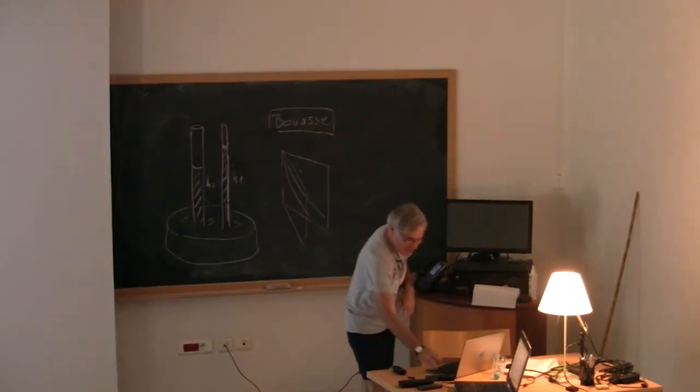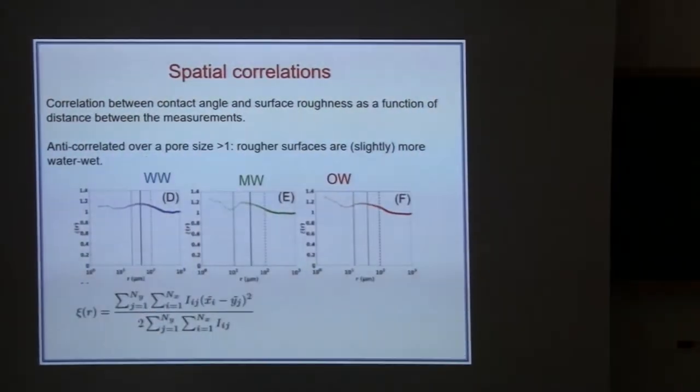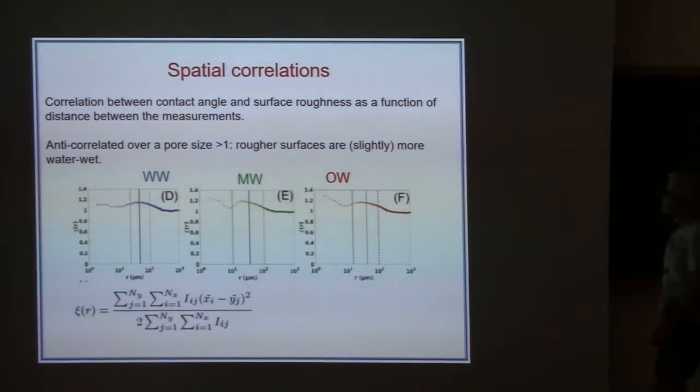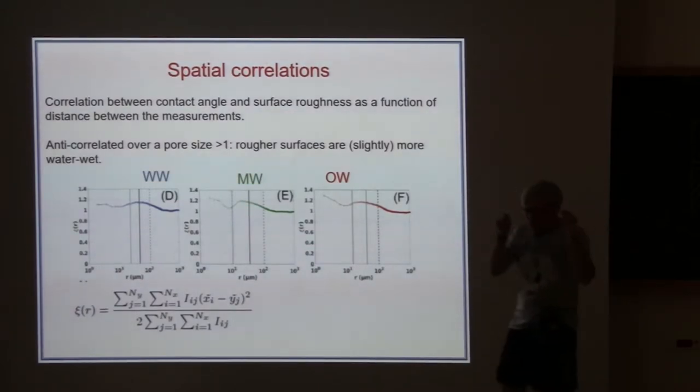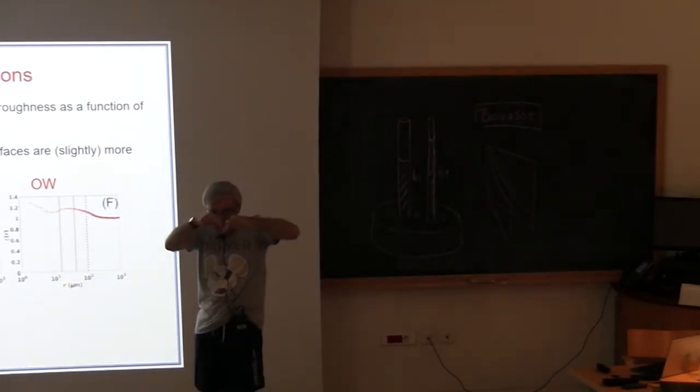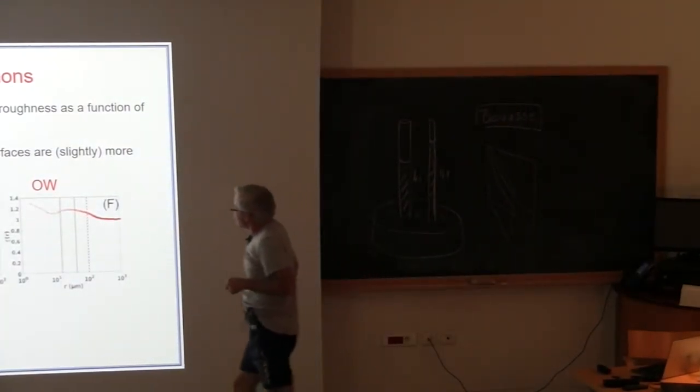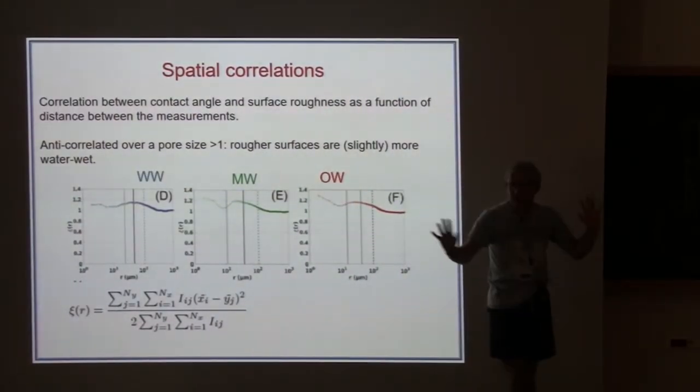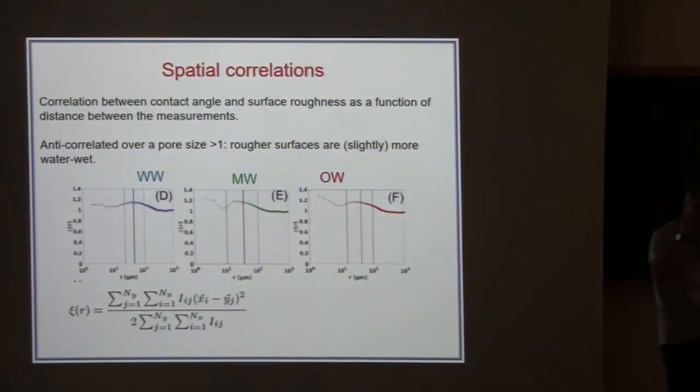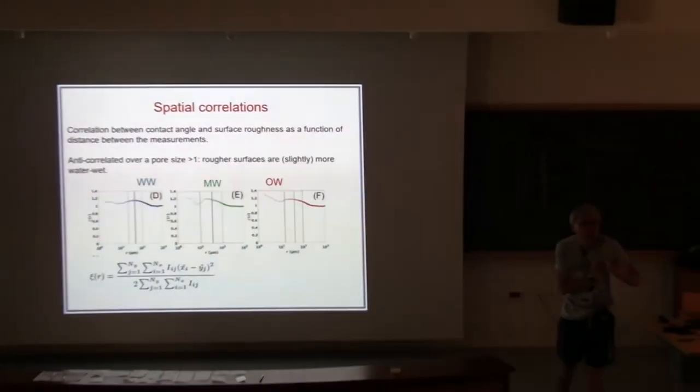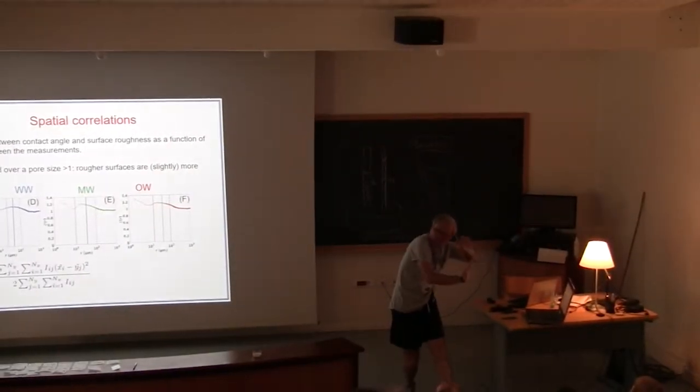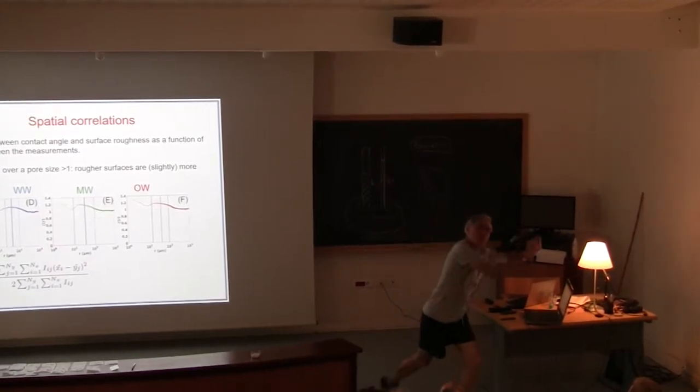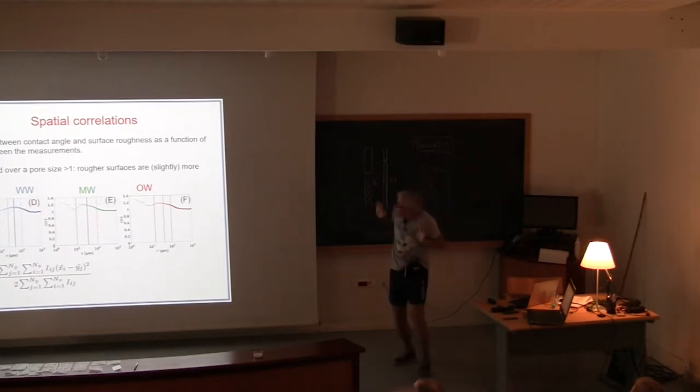If you remember Danny's talk about Cassie-Baxter wetting and Wenzel wetting - if you have a rough oil wet surface, roughing it up makes it more oil wet. So you'd expect to measure this on a flat surface, but on a rough surface the distribution is bang here, not what you see. That's another question - why is that? We can also measure surface roughness, the deviation from a smooth surface locally. We look at the correlation between roughness and contact angle measurements as a function of distance. After about a pore size they're unrelated, but within a pore size there's a tendency for rougher surfaces to be more water-wet, less strongly non-wetting. So a rougher surface should be more water-wet than a completely smooth surface. That makes sense.